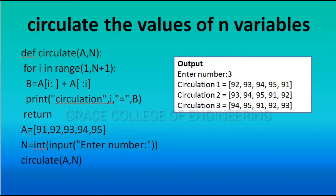The main function starts: a = [91, 92, 93, 94, 95] — the list is created. Then n = int(input('Enter number')). Then circulate(a, n) is called to execute the function.